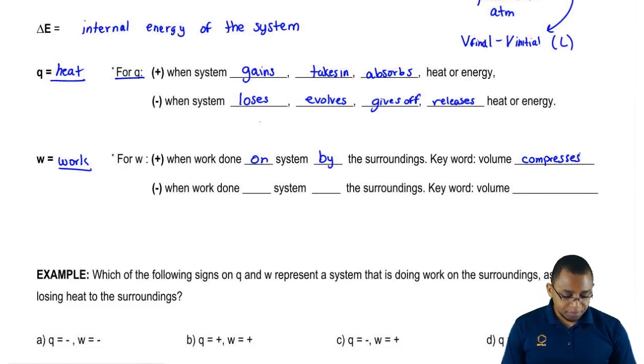Work could be negative if we say that when work done by system on the surroundings. Key word here, volume expands. The volume increases. If you see the volume increasing, that's because our system is doing that. It's doing the work and therefore work would be negative.